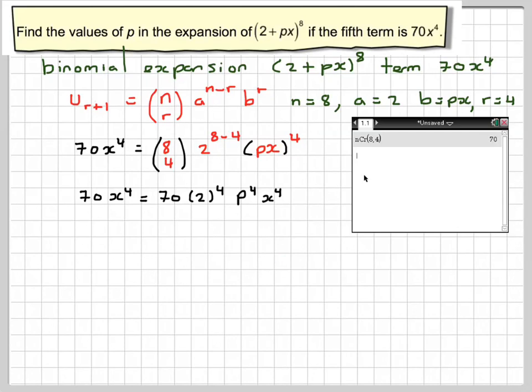We're only interested in the coefficients. So equating the coefficients, we know that 70 has to be equal to 70 times 2 to the 4 times p to the 4. So we're going to have 70 is equal to 70 times 2 to the 4, which is 16, p to the 4.